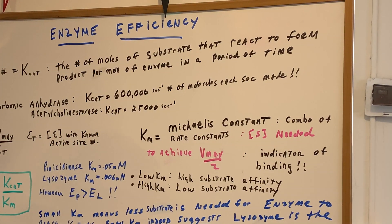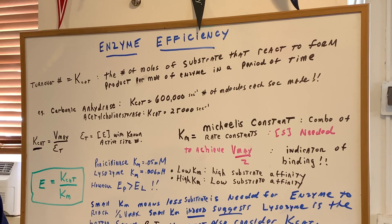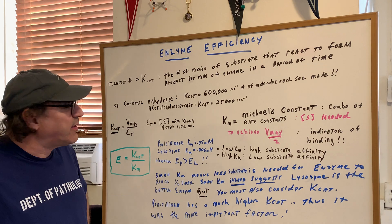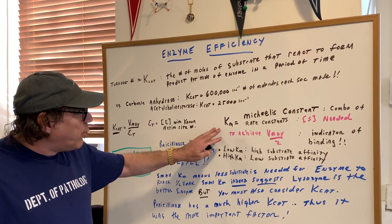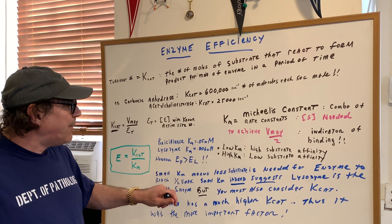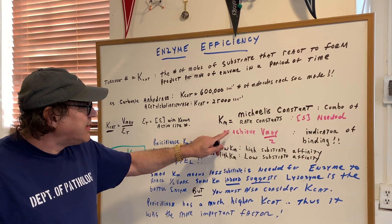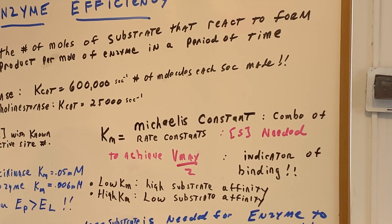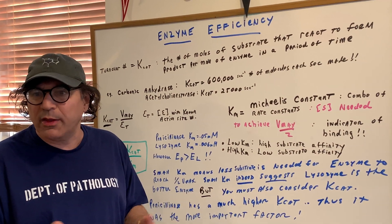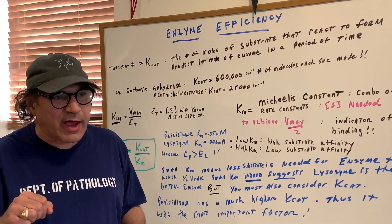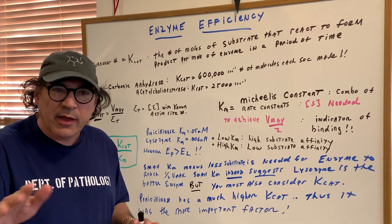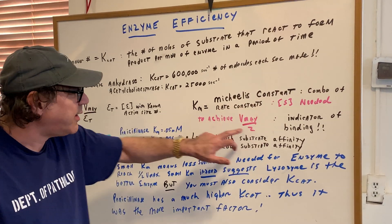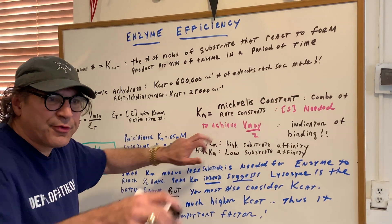Now the KM — this stands for the Michaelis-Menten constant. When you go to grad school, you'll learn in biochemistry something called Michaelis-Menten kinetics. But for now, what I want you to understand is that it simply means it's the amount of substrate needed to get to half Vmax. That's a guaranteed test question. Think of it like a cup of coffee in the morning — if you only need half a cup of coffee to get to half speed, that would be the KM.